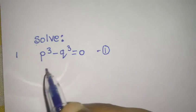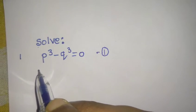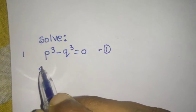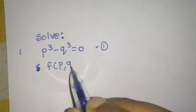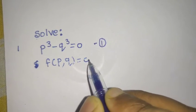We can directly say that the solution, or first of all we can write that this is F(P, Q) = 0.